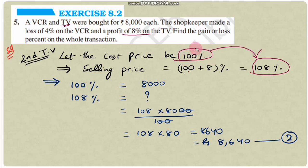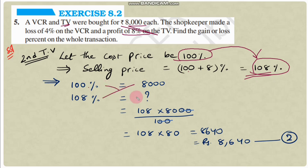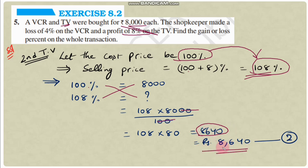Using cross multiplication: selling price of TV = 108 × 8000 ÷ 100 = 108 × 80 = 8640 rupees. So the selling price of the TV is rupees 8640.